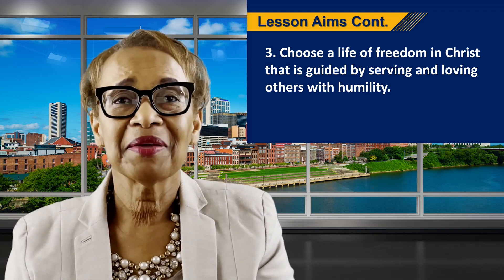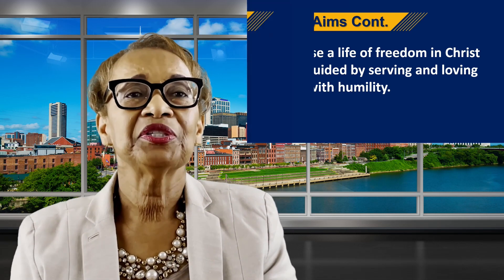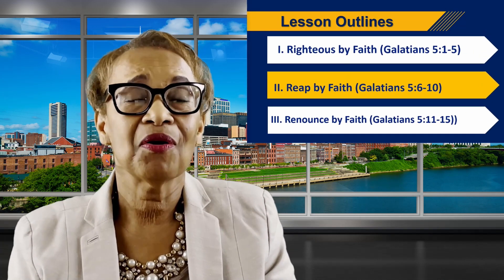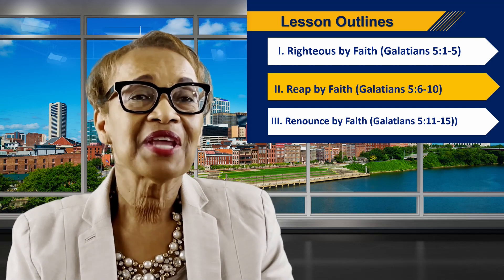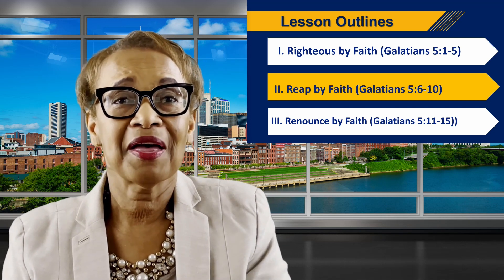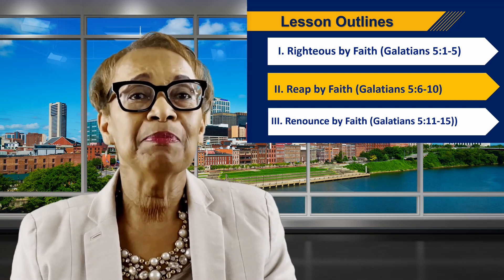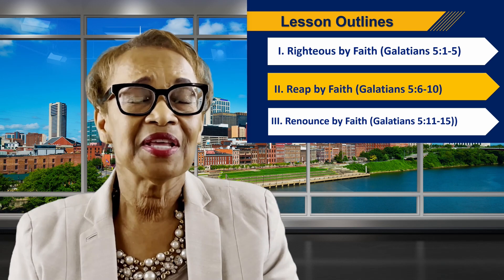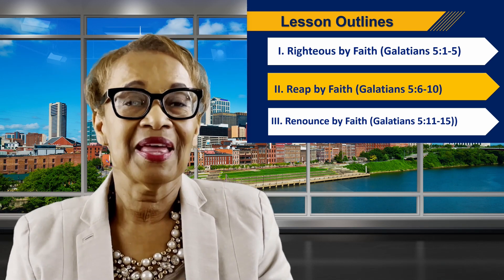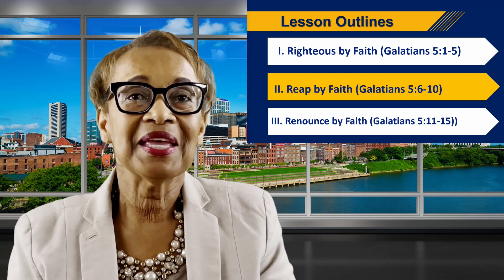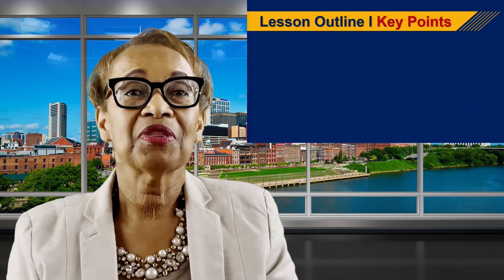As we continue our glimpse into this week's Sunday School lesson, I'm going to share two key points from each outline in the lesson text. There are three outlines presented in the Adult Faith Pathway Sunday School book. The first outline is Righteous by Faith, Galatians chapter 5 verses 1 through 5. The second is Reap by Faith, Galatians chapter 5 verses 6 through 10. And the third is Renounce by Faith, Galatians chapter 5 verses 11 through 15.